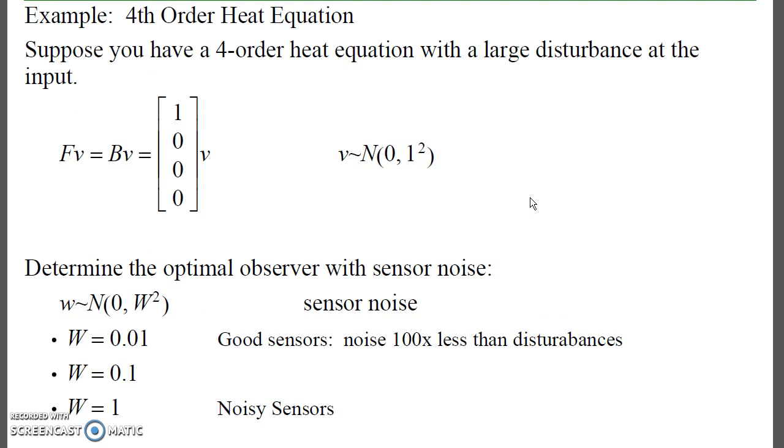An example of how those work. Suppose I have the fourth order heat equation one more time. I've got a disturbance on the first state. And it has a mean of zero, standard deviation of one. Find the optimal observer when I have sensor noise. Either the sensor noise is 0.01 for the standard deviation, meaning a very good sensor. 0.1 or 1 mean I have a really lousy sensor.